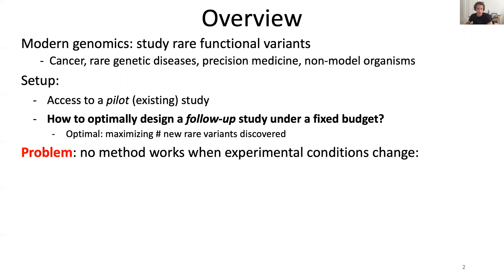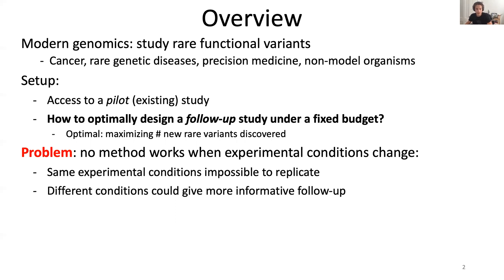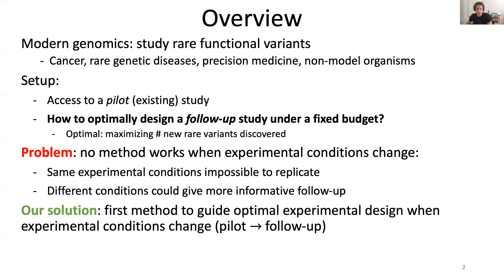The new problem that our methodology solves is the following. While there exist methods in the literature which consider the problem of predicting the number of new variants going to be observed under the same exact experimental conditions, no existing method works when experimental conditions are changing. This is a major limitation because the same exact conditions might be hard or impossible to replicate — for example, because of technological constraints — and moreover, as experimenters we might want to change conditions to obtain a more informative follow-up. Our solution is to provide the first method to guide optimal experimental design when conditions are allowed to change between the pilot and the follow-up.